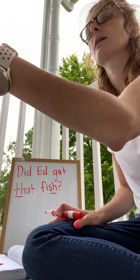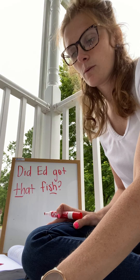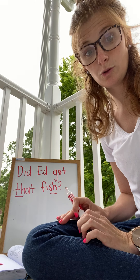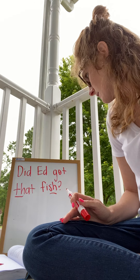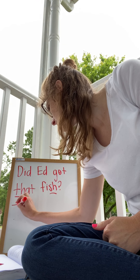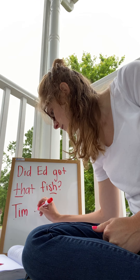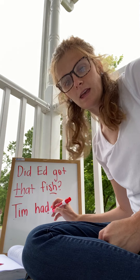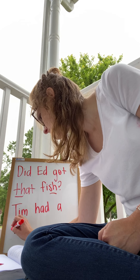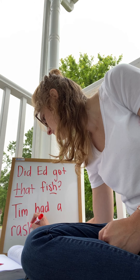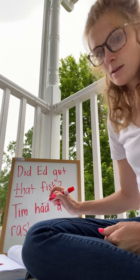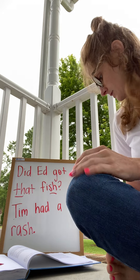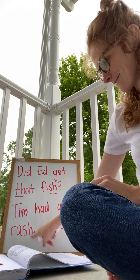Okay, stop - you're going to get paint on the ground. We're going to do two more. This one is about Tim, and he's our character, so we're going to write: Tim had a rash. This one isn't a question, so we'll just put a period. Tim had a rash. Read it again. Tim had a rash. Good.